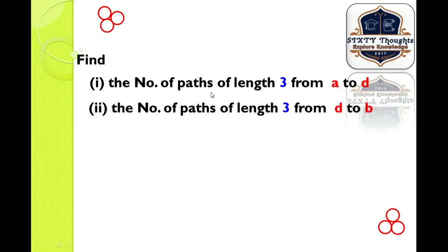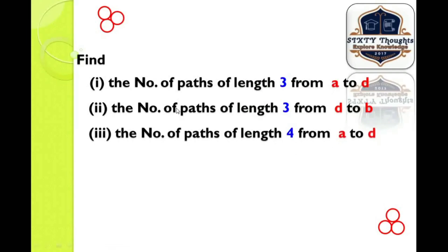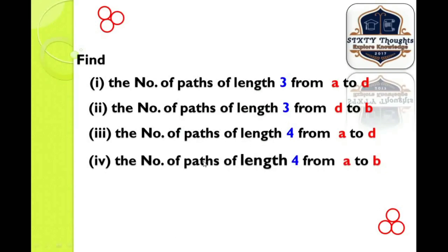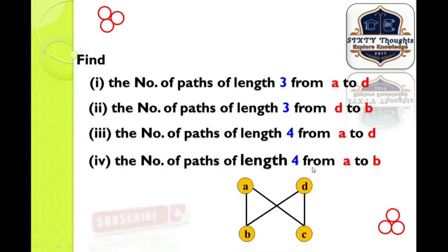Find the number of paths of length 3 from vertex A to D. Second question: find the number of paths of length 3 from vertex D to B. Third: find the different paths of length 4 from vertex A to D. Fourth: find the number of paths of length 4 from vertex A to D using the given graph.